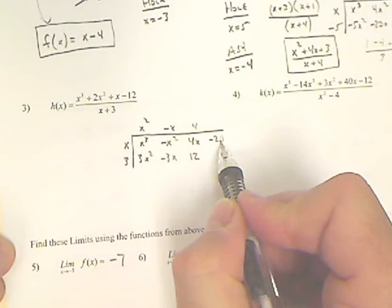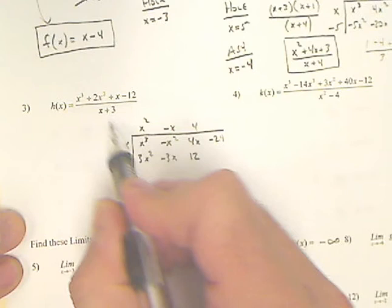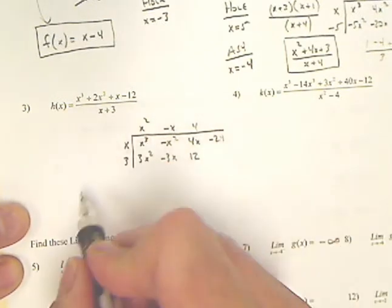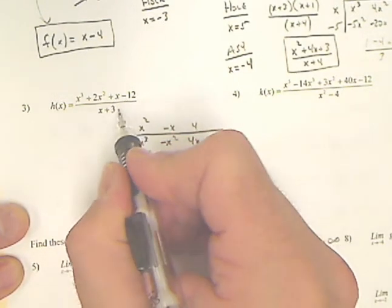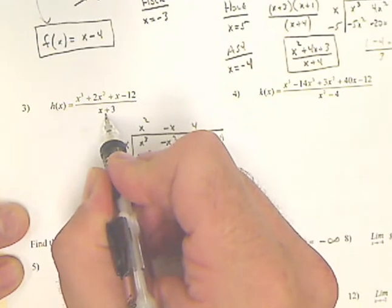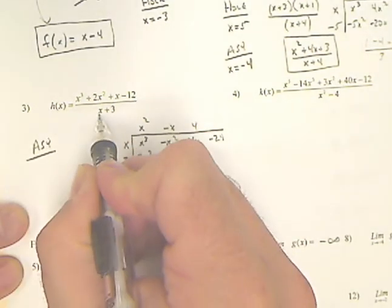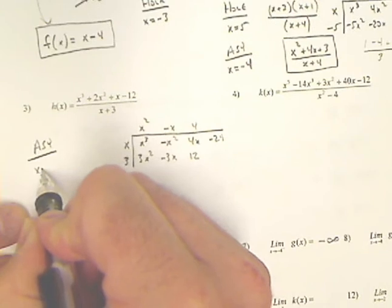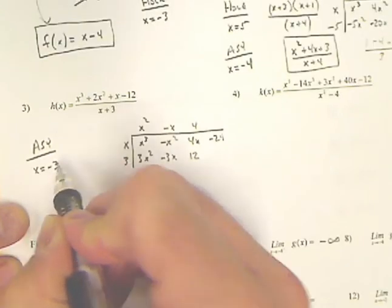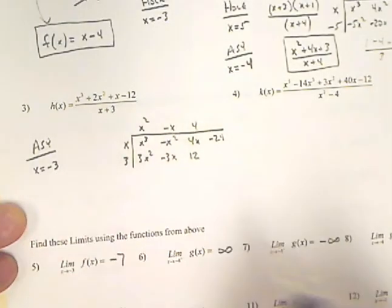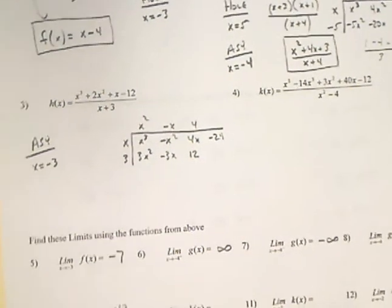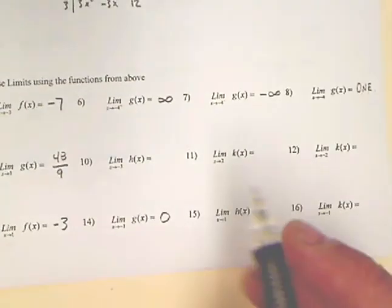Because we have a remainder, x plus 3 does not factor out of that numerator. And if it doesn't factor out of the numerator, and it stays in the denominator, we found an asymptote. What x value makes this 0? Negative 3 does. So no holes. That's okay.